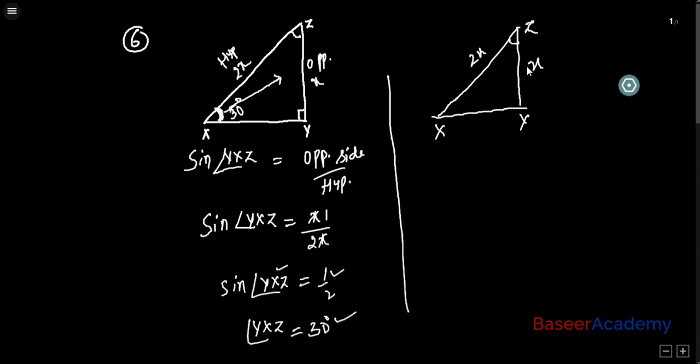For angle YZX, the X that is given is the adjacent side. For angle Z, this X is the adjacent side, and this 2X is the hypotenuse. So I know the adjacent side and I know the hypotenuse. So I'll take cos theta, because cos theta is adjacent side by hypotenuse.